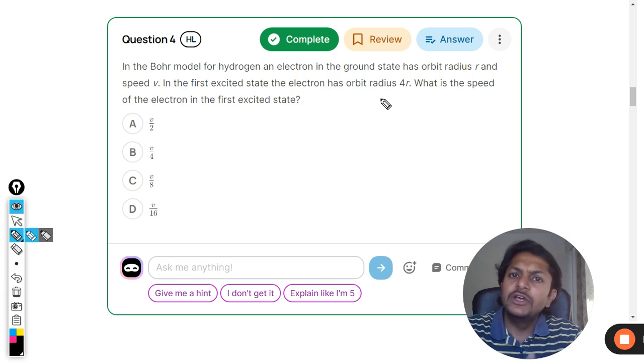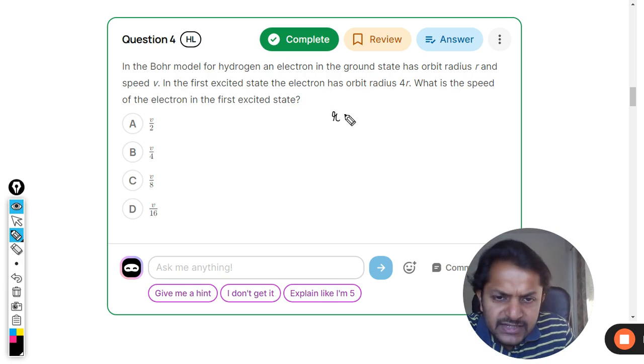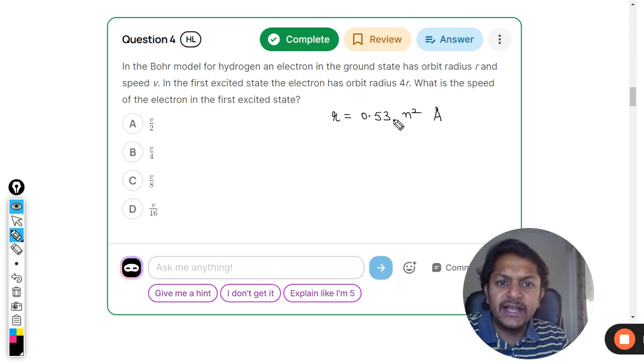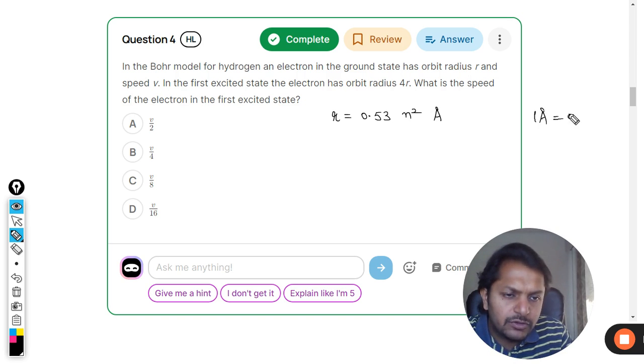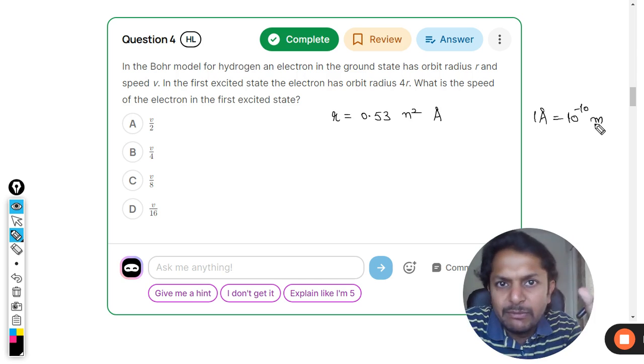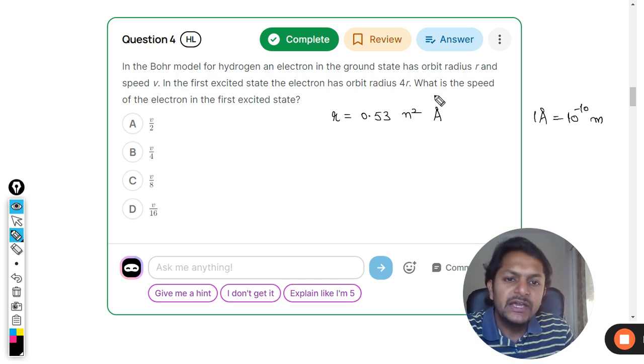There are two formulas that you need to remember. The radius is given as 0.53 n square, and the unit for the radius is angstrom. So one angstrom is equal to 10 raised to power negative 10 meter. So this is something that you need to remember. Radius is always directly proportional to n square.